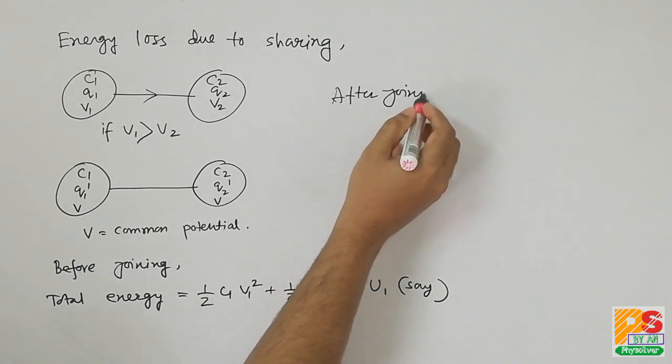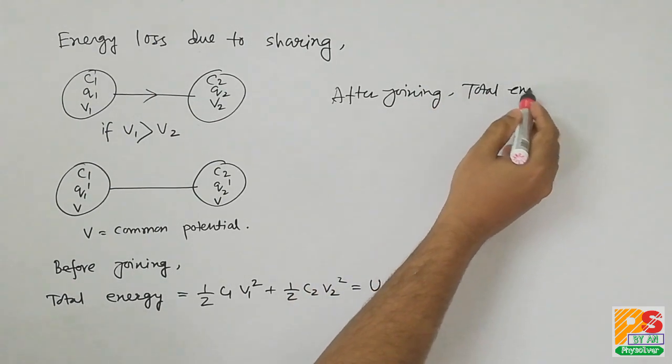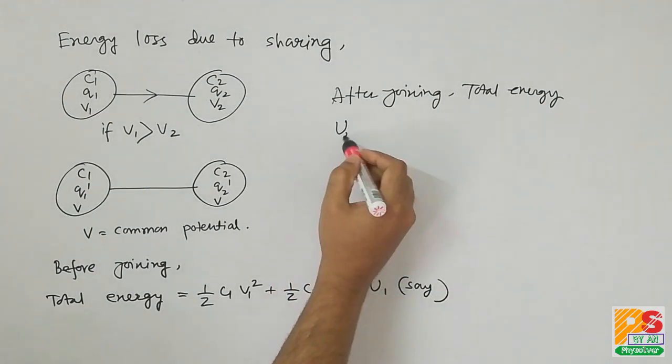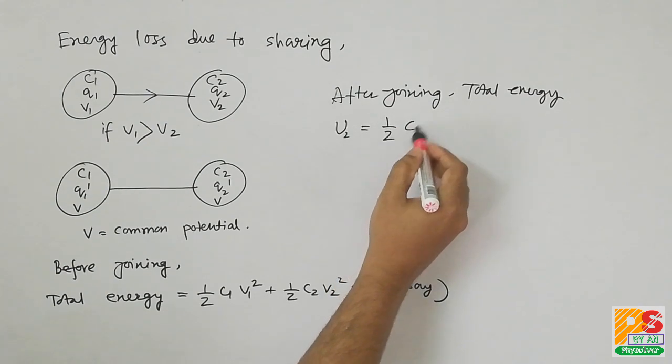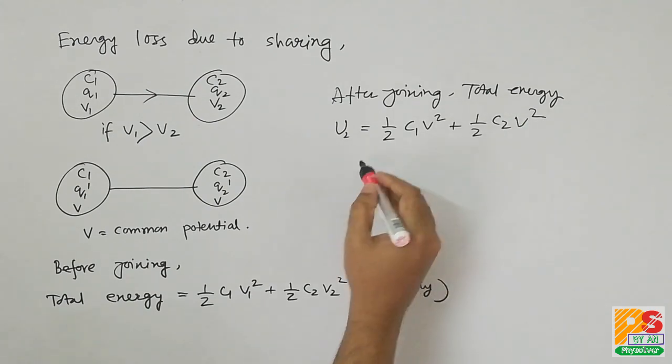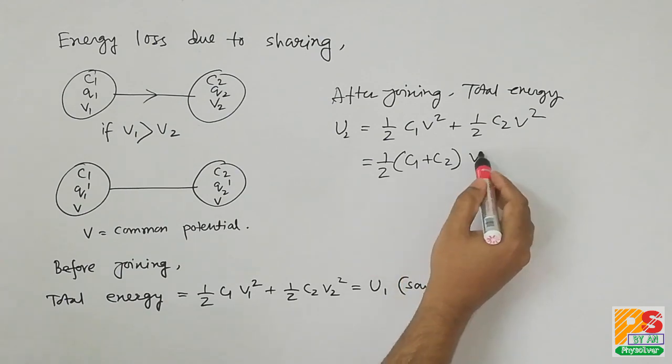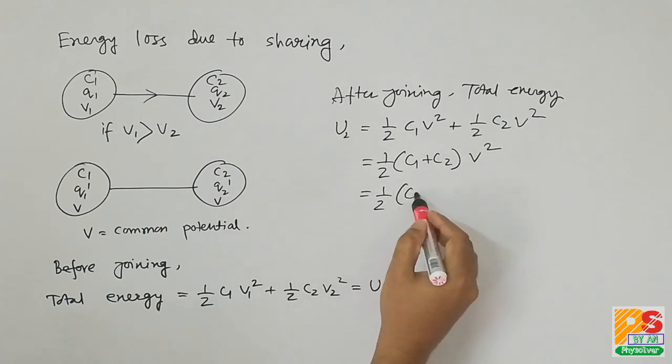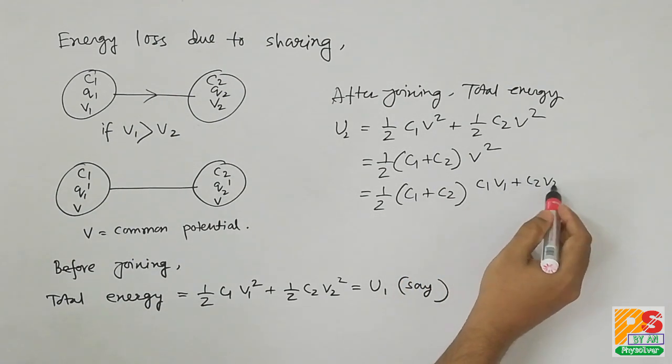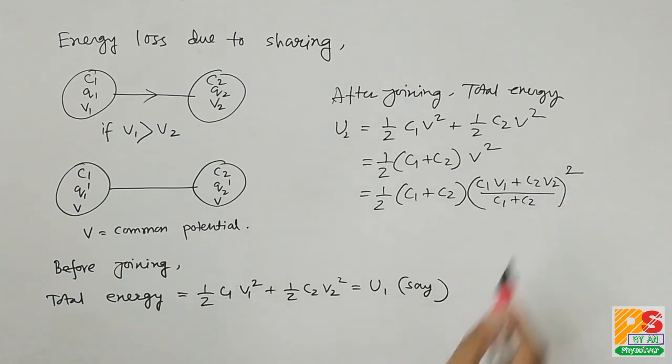Now after joining, total energy will be U2 equals to half C1 V square plus half C2 V square, where V is the common potential and we can write V as C1 V1 plus C2 V2 divided by C1 plus C2.